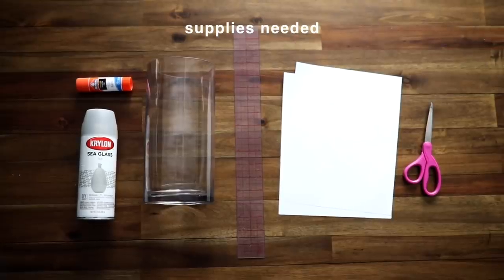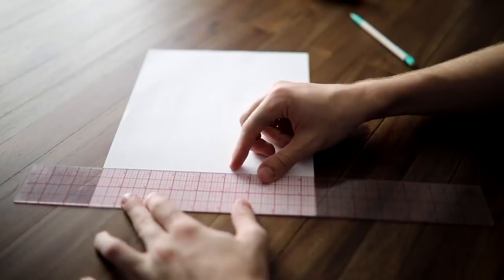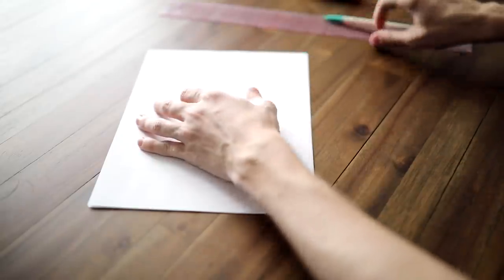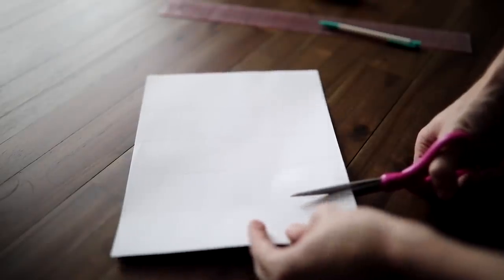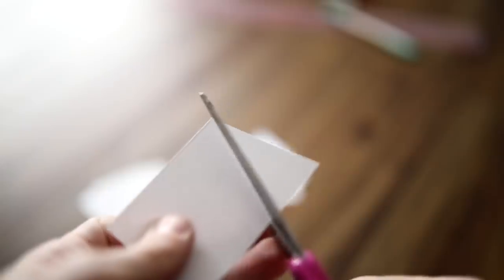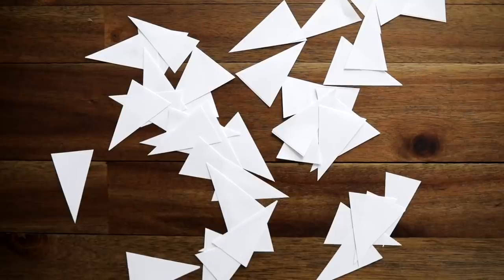DIY number two: all you need is some sea glass spray paint, a glue stick, a vase, ruler, paper, and scissors. I absolutely love the look of this frosted glass vase—it looks so expensive and very West Elm-esque.